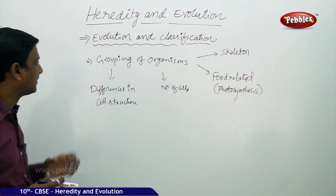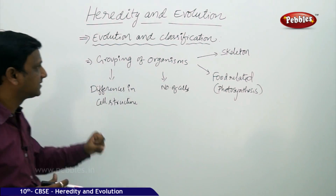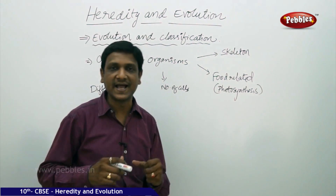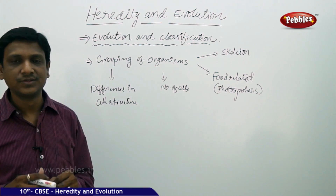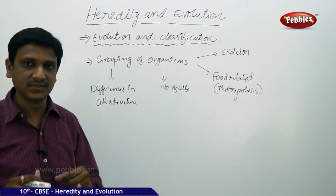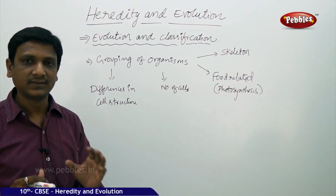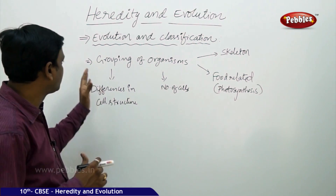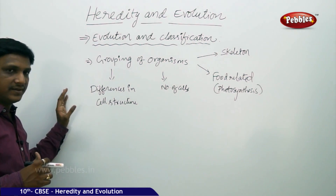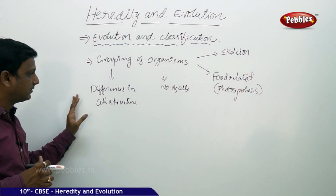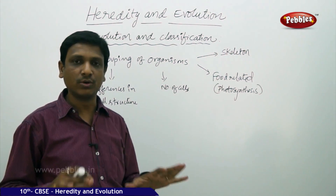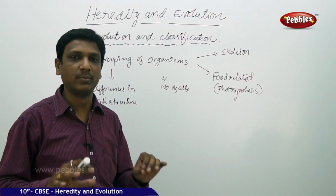So classification helps, but how are organisms classified? They are classified based on characteristics and various features. Primarily, organisms are classified depending upon their cell structure. We know that all living organisms are made up of cells — the basic structural and functional unit of life.